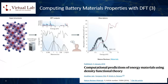Third, studying electrochemical stability: DFT can be used to investigate the stability of materials under different conditions — for example, varying voltage or temperature — providing insight into the electrochemical stability of the material as well as its potential for cycling stability. Fourth, investigating interfaces and surfaces: the properties of the interface between the electrolyte and the electrode material have a significant impact on battery performance. DFT can be used to model these interfaces and study properties such as adsorption energy, charge transfer, and interfacial energy barriers.